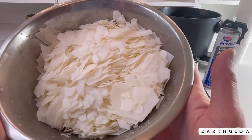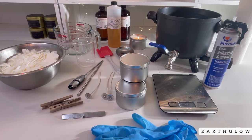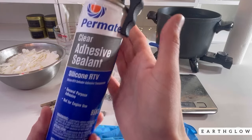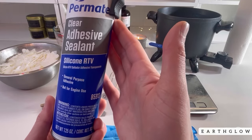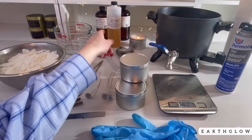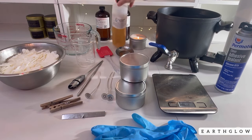You'll need your wax and in today's video I'm using 464 soy for this and you'll also need something to adhere your wick to your vessel. I use Permatex clear adhesive sealant and my wicks don't go anywhere. You'll also need your fragrance and I have a choice of three different scents that I'm recommending for this project.